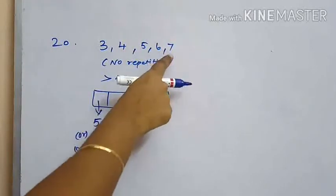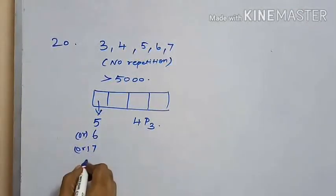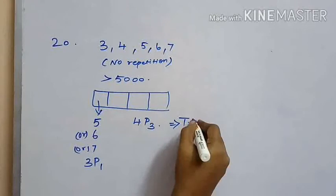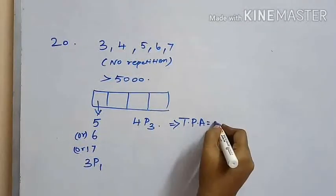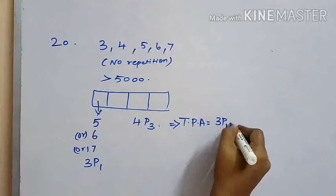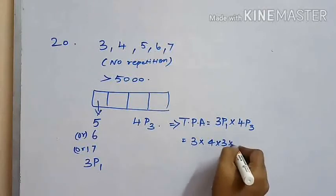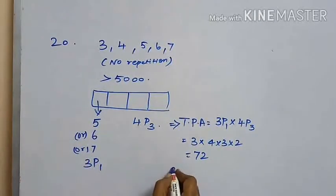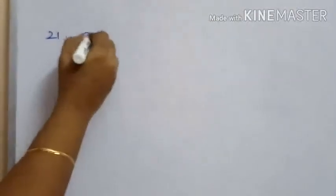The first position can be filled in 3P1 ways. The remaining three positions can be occupied by any of the four other digits in 4P3 ways. So the total possible arrangements are 3P1 into 4P3, which is 3 into 4 into 3 into 2, which equals 72. Option A is the answer.